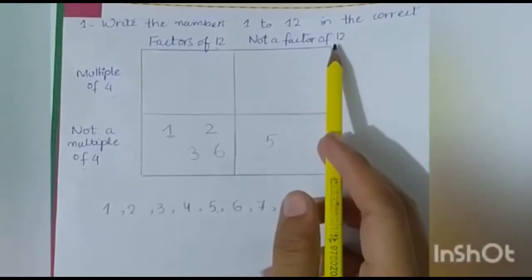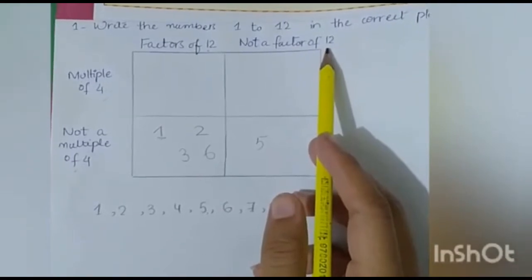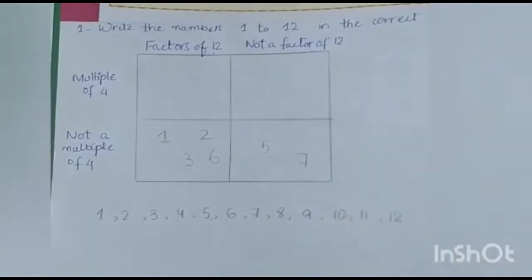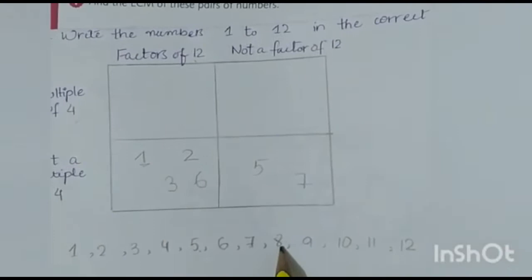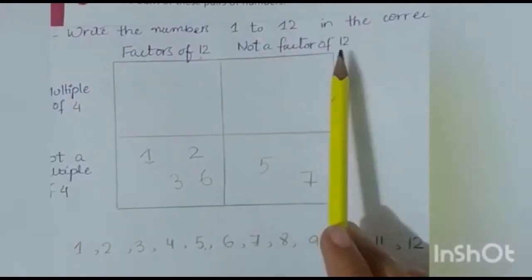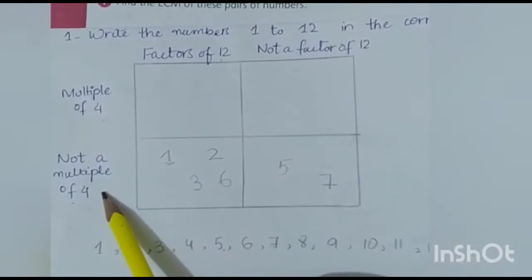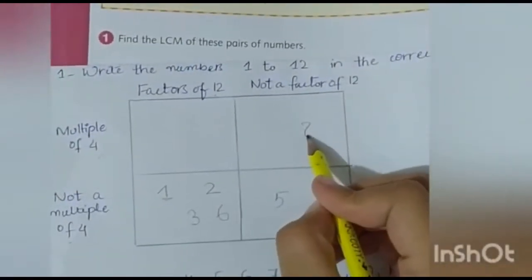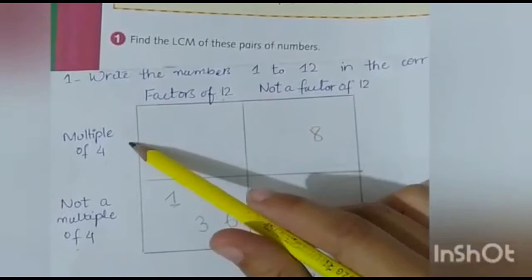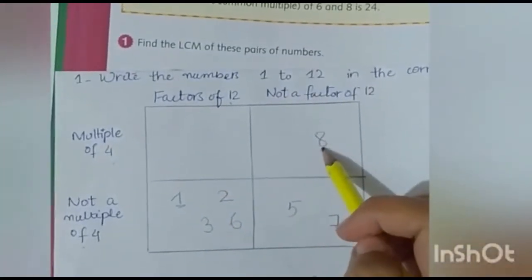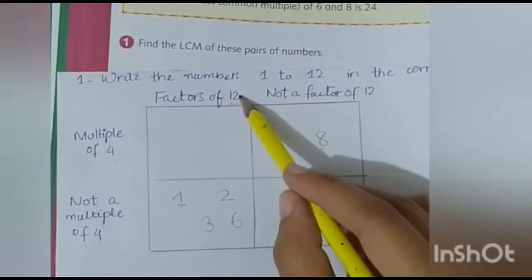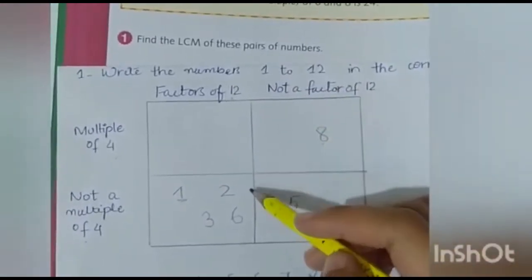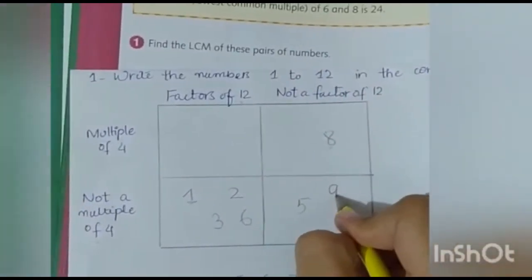Seven is not a multiple of 4, and 7 is not a factor of 12. We write 7 in the not-a-factor-of-12 column. Eight is not a factor of 12, but 8 is a multiple of 4, so we place 8 in the multiple-of-4 column. Nine is not a multiple of 4 and not a factor of 12, so we place 9 accordingly.